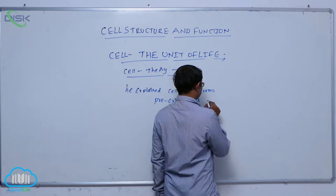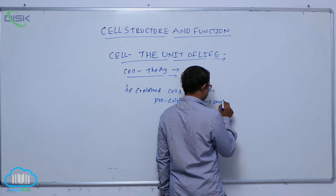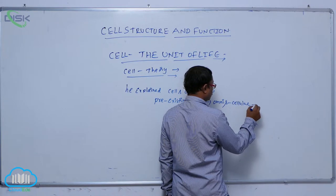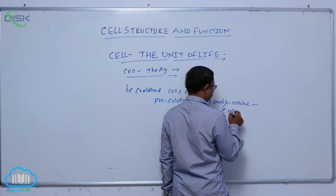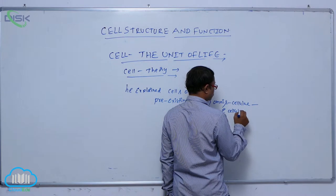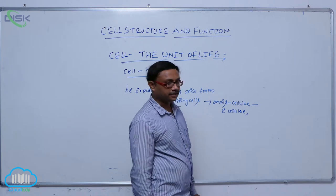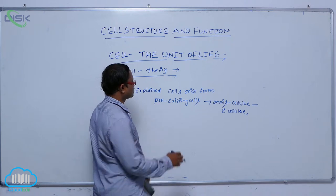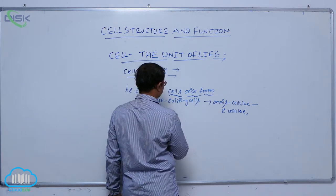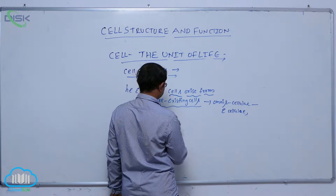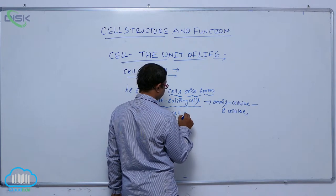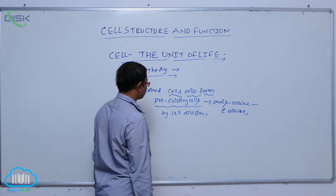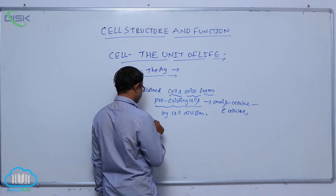In Latin language, this is known as 'omnis cellula e cellula,' which means cells arise from pre-existing cells by cell division. This is also known as the cell lineage theory.